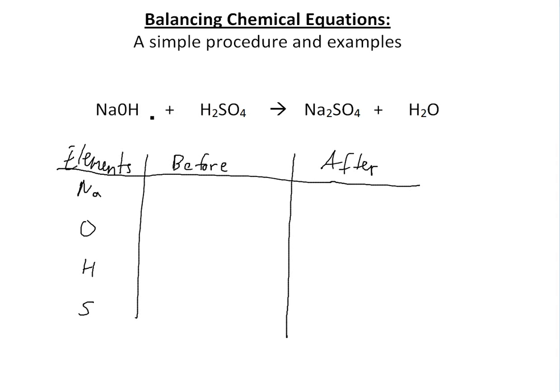And then so before Na there's only one. After there's two. O there is five. And then O afterwards is five as well. So that's good. And then H before is three. H after is two. And for sulfur we have one here and one here.